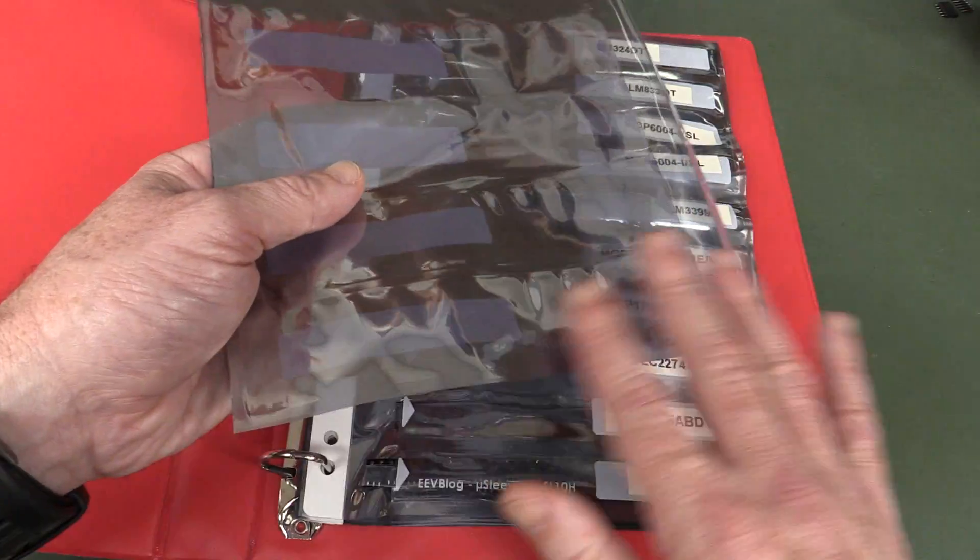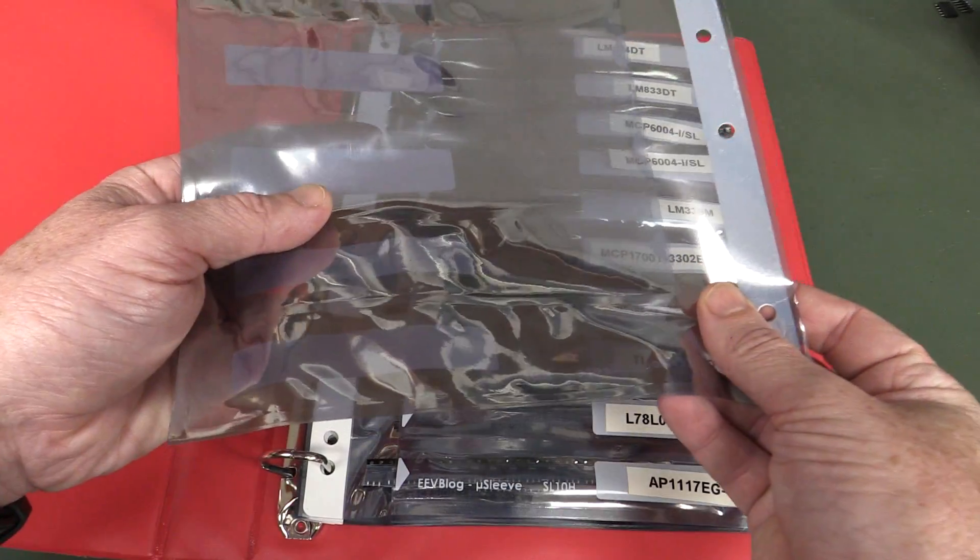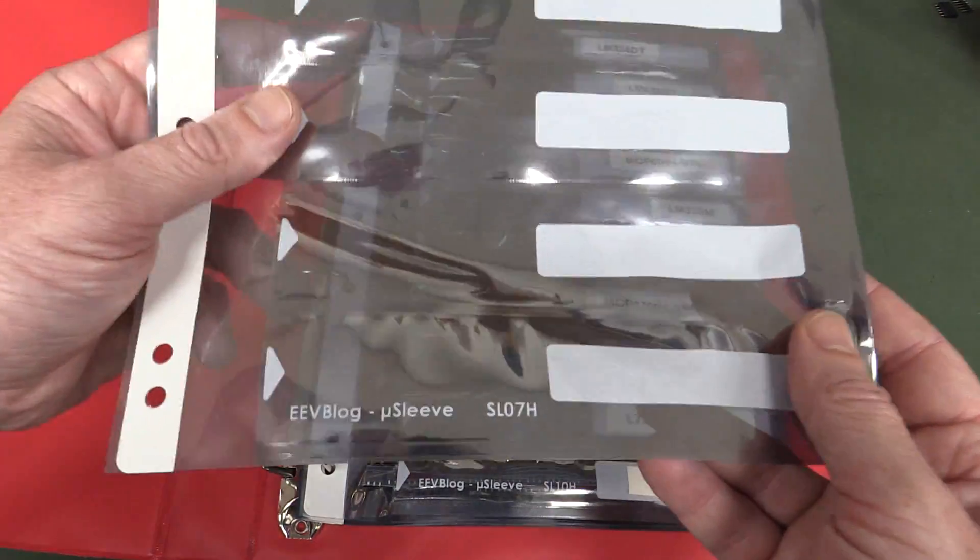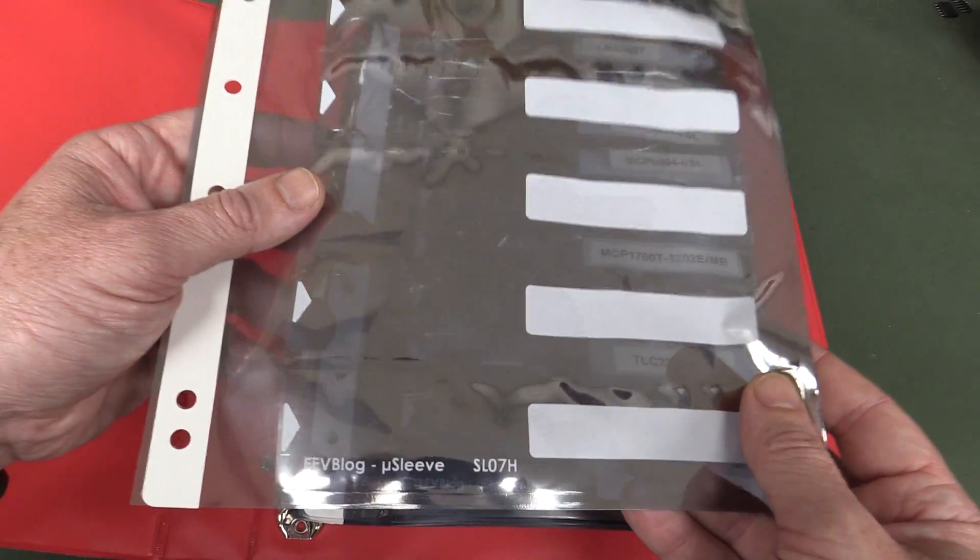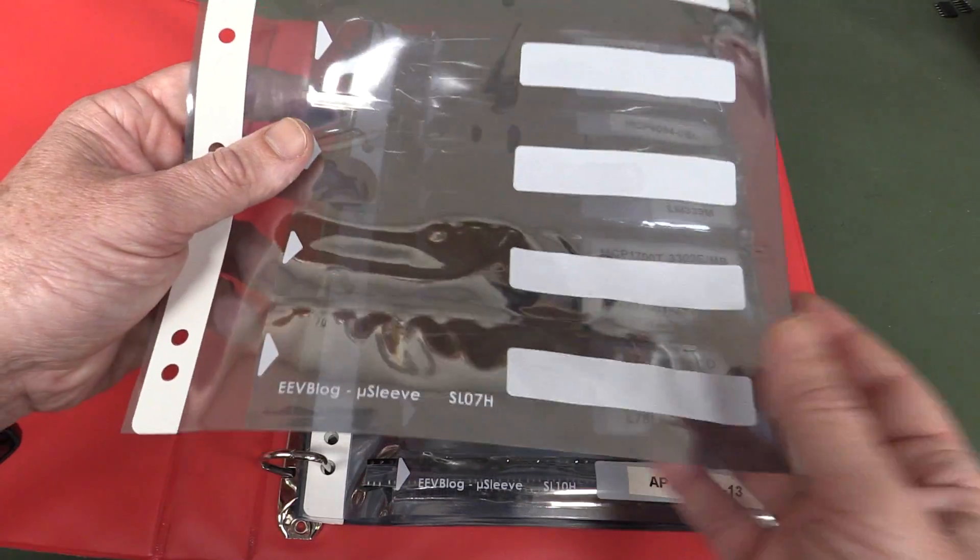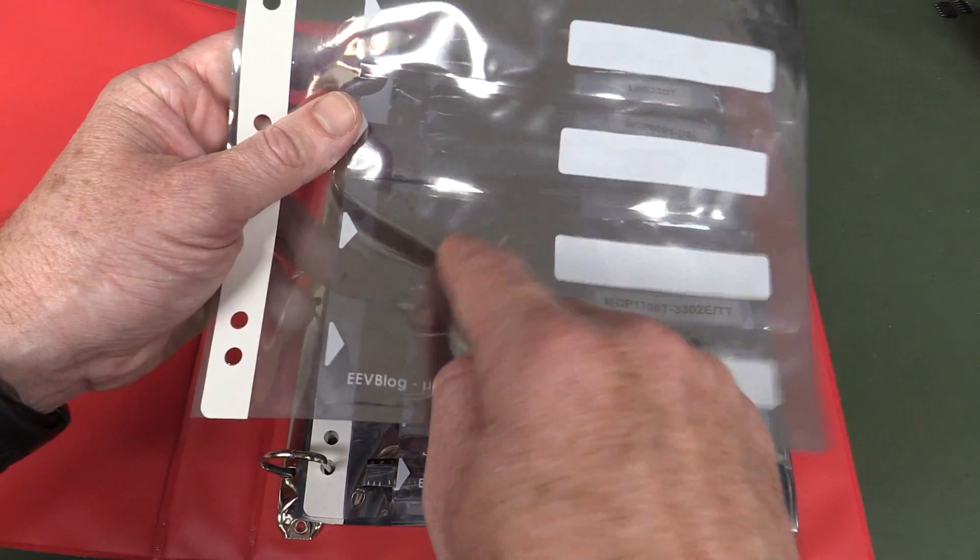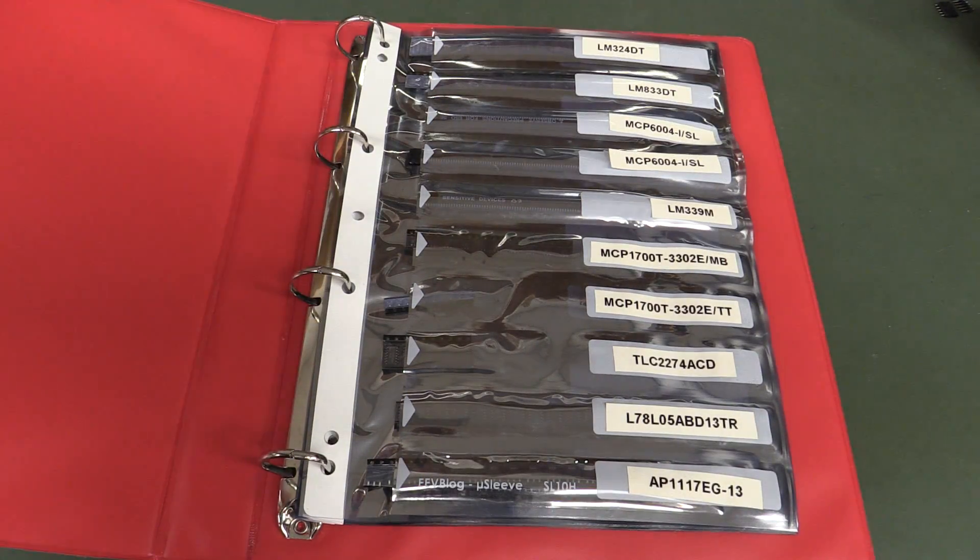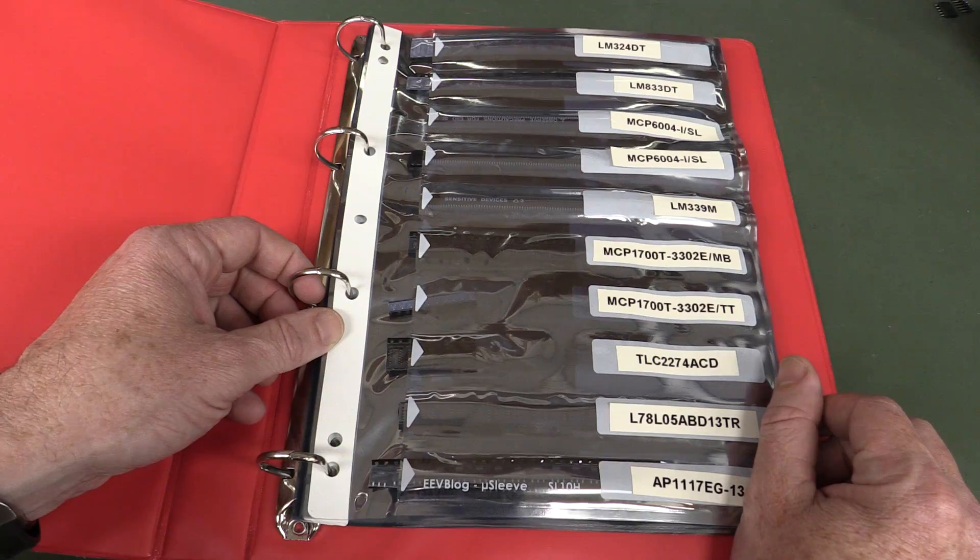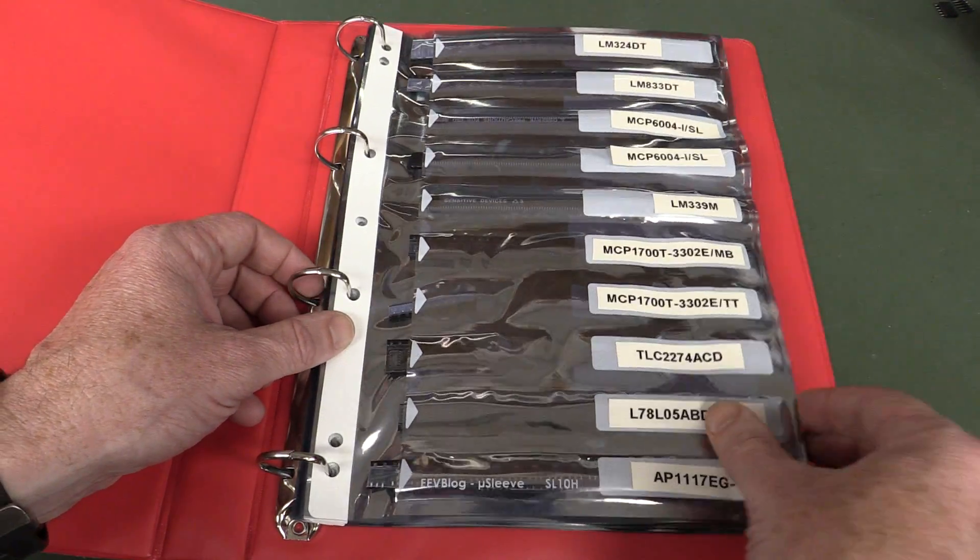So this is actually proper static shielding bag material, it's got the metalized layer in there, so they're proper, like a proper static shielding, not just static dissipative. It actually shields it so you can't zap through those. So a nice, safe storage solution for your parts, I really quite like it.